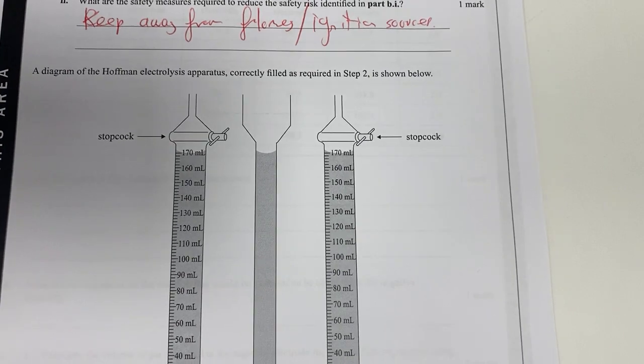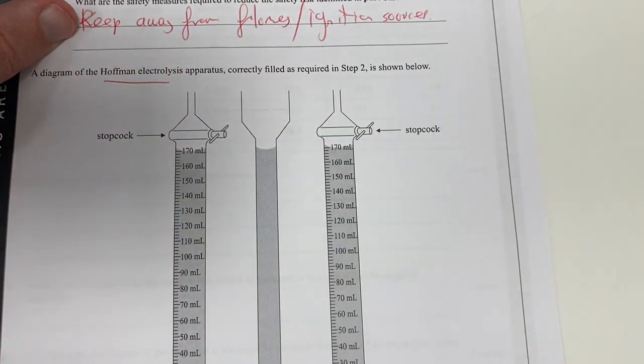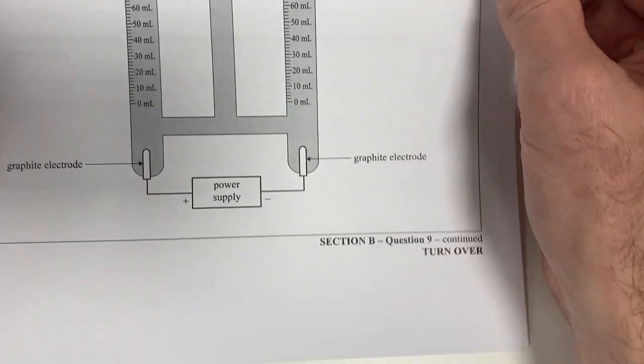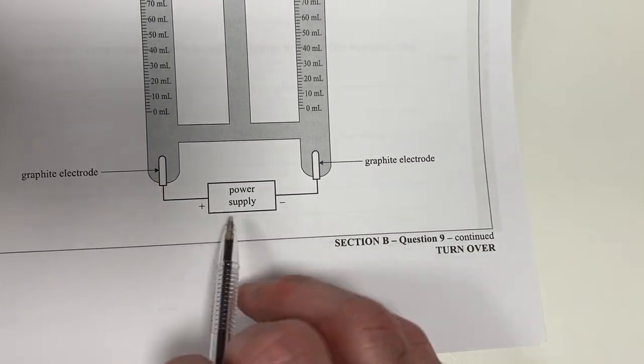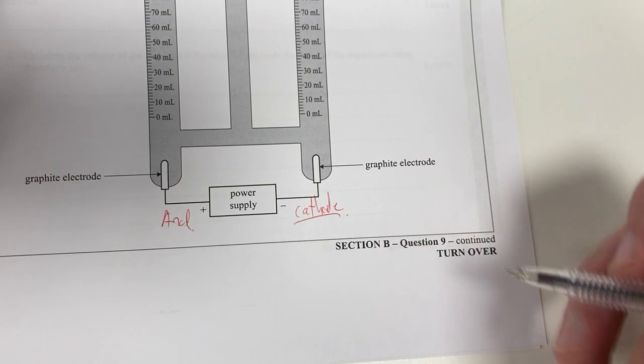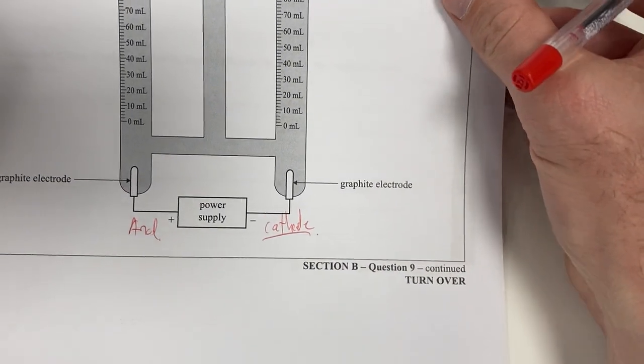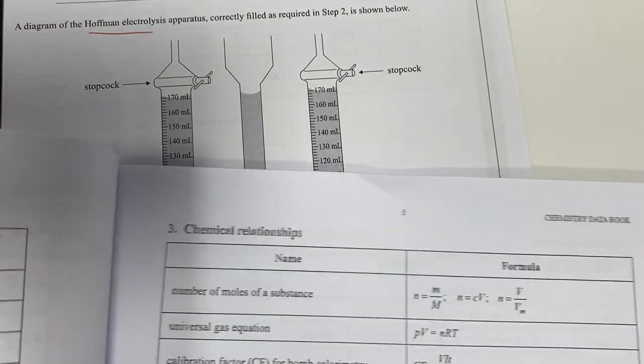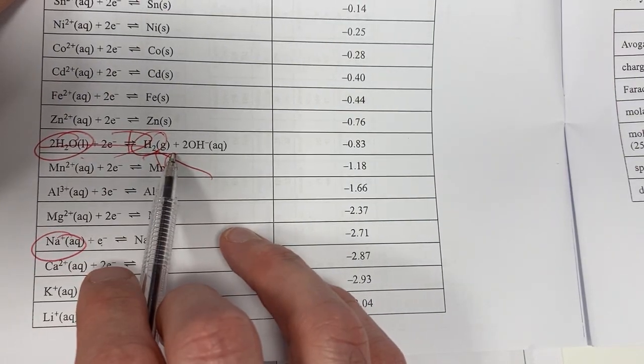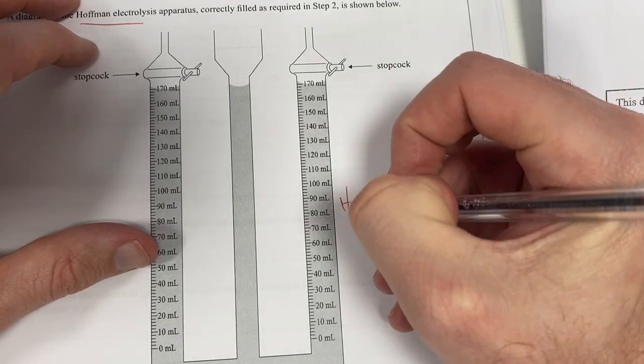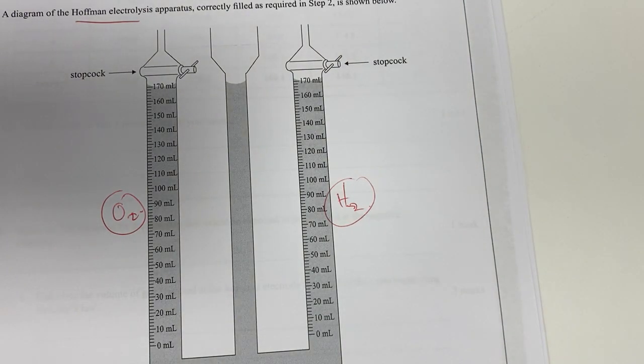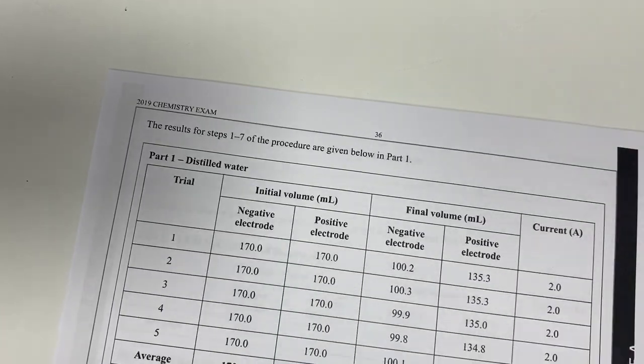I've got my apparatus. This is a diagram of Hoffman apparatus correctly filled as required in step two. I've got my power supply. Positive over here, this is my anode. This is my cathode because this is electrolysis. Cathode's negative in this case. At my cathode, I'm going to have reduction happening. I'm going to have hydrogen H2 produced over here. And I'm going to have O2 produced over here if it is in a relatively weak solution.